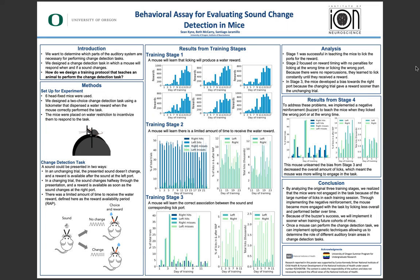In these trials, I limited the amount of time the mouse could receive the reward, defined as the reward availability period or RAP. For the experiment, I used six head-fixed mice and the first training stage taught the mice to lick from the ports to receive a reward. The data from stage one showed the number of times they licked the ports, which increased steadily, and by day 17 they had learned the task and could be moved on to stage two.